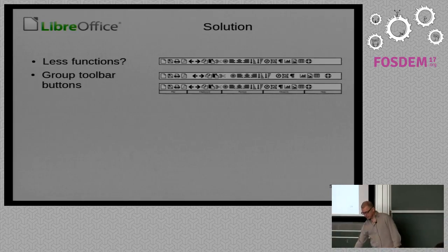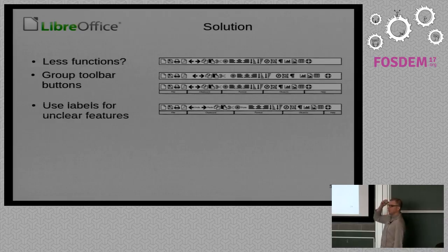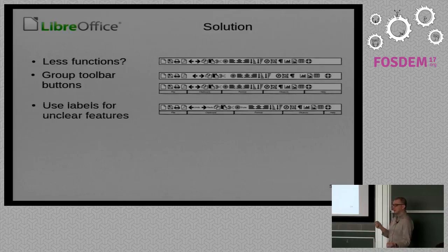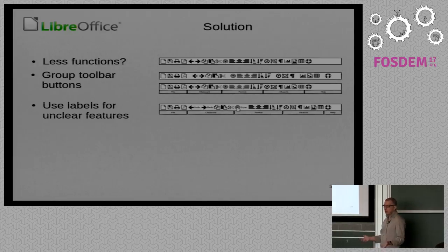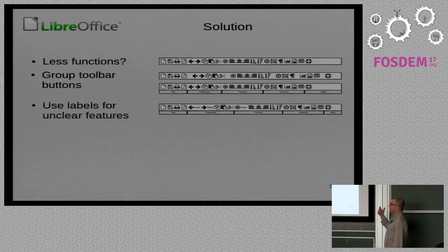What else? You can use labels for the functionality, because at least me, I always struggle with undo, redo — is it really left to go back? Not so sure. If there is a label for this function, I'm absolutely clear. And if the style icon here — the target, whatever it is — if there is a label 'style', you will know that it opens a menu for applying a style to the selection. So at least the less often or less well-known functions should get a label.